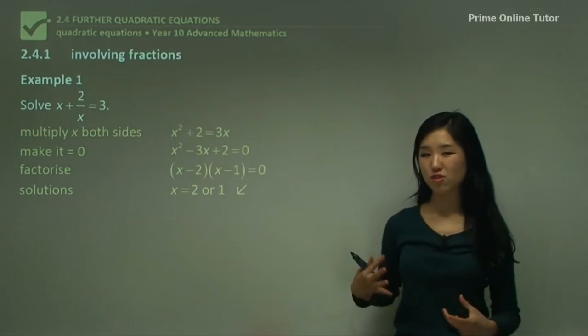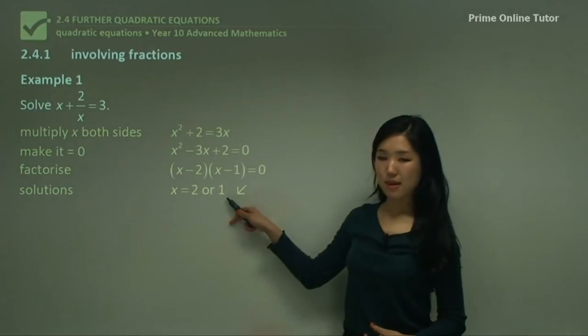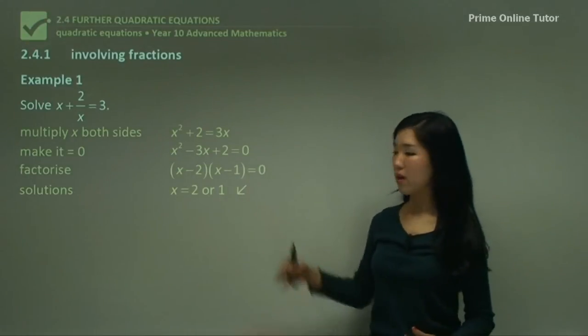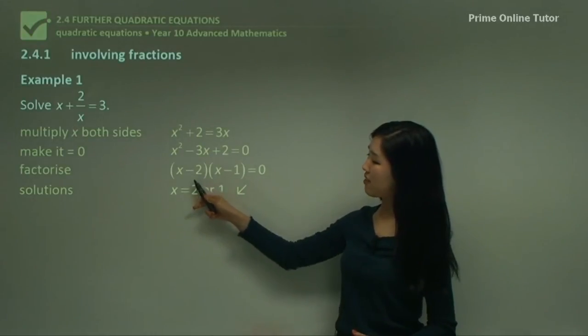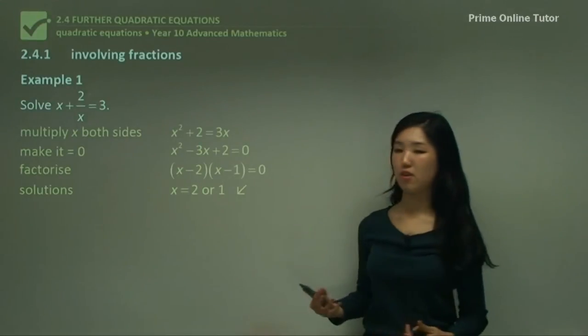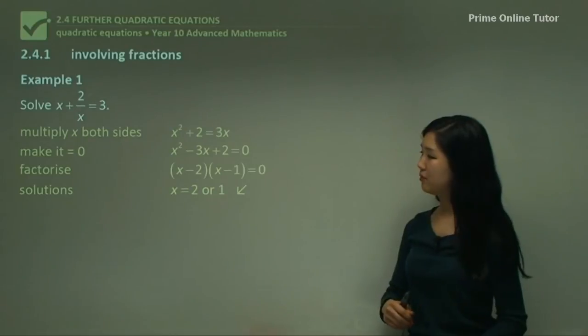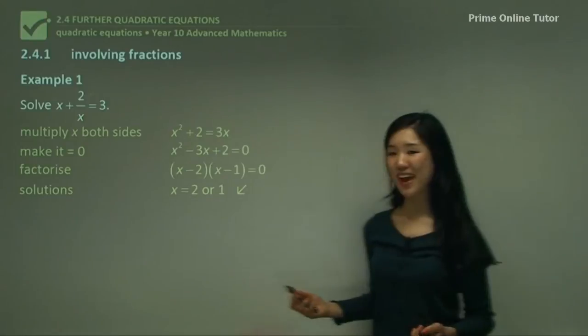Now guys, you should try to be familiar with going straight to this step now, without adding that extra step. Trying to be used to going straight from this step to this step. Basically, it's just changing that sign to a positive. You can probably do this in your head. That's our example. The key to it is to multiply both sides by the denominator.